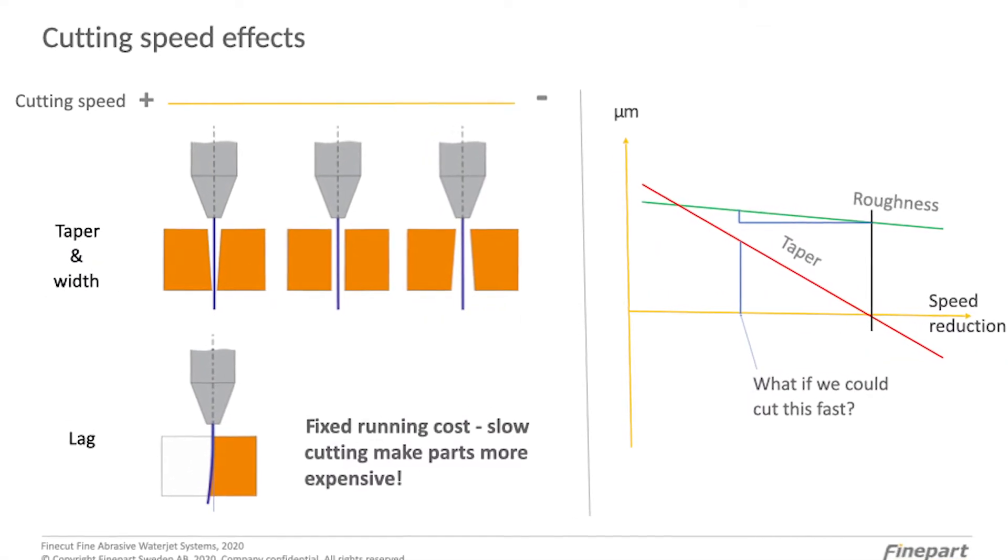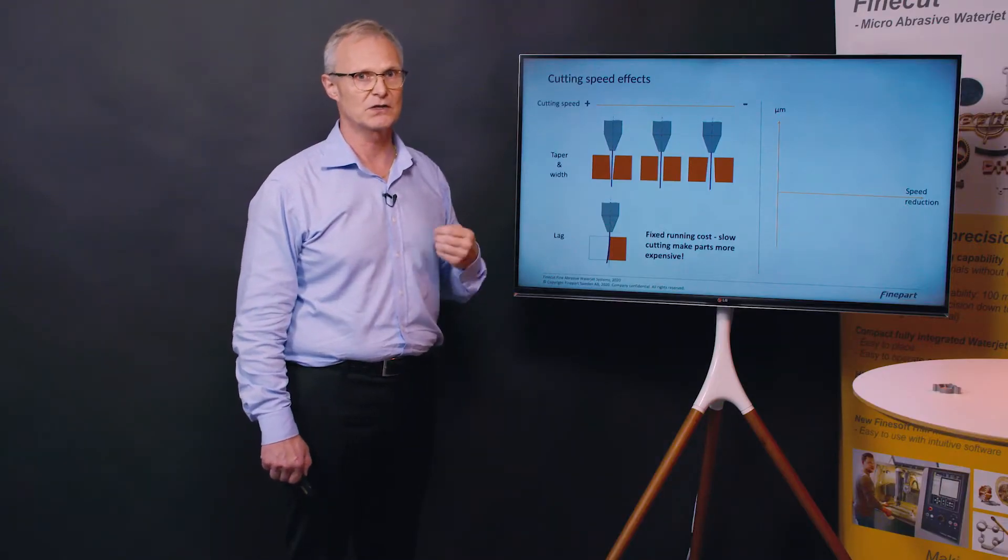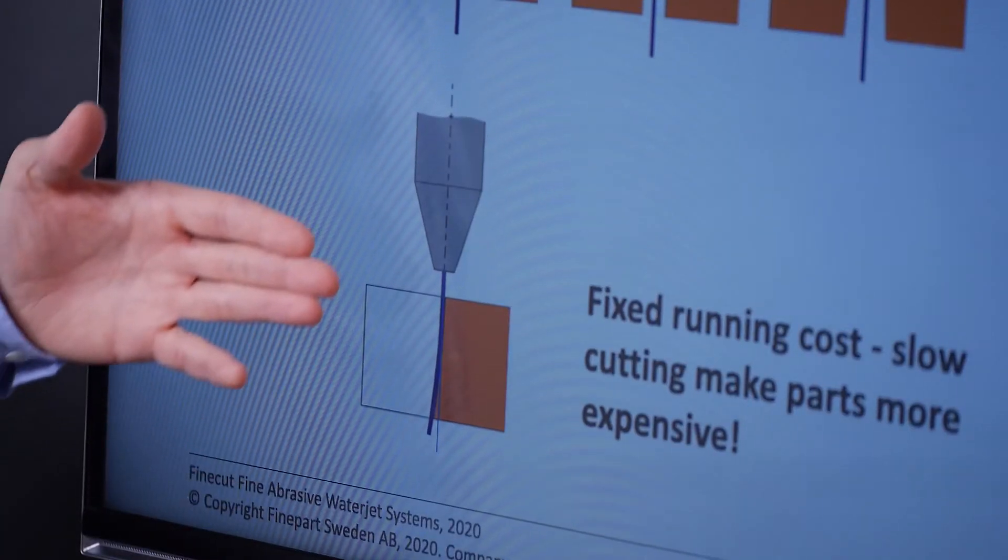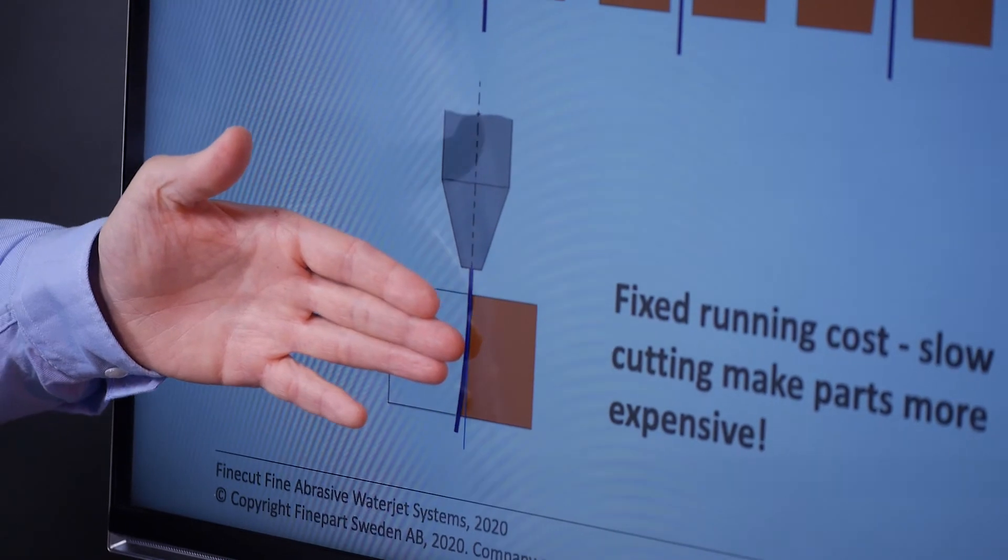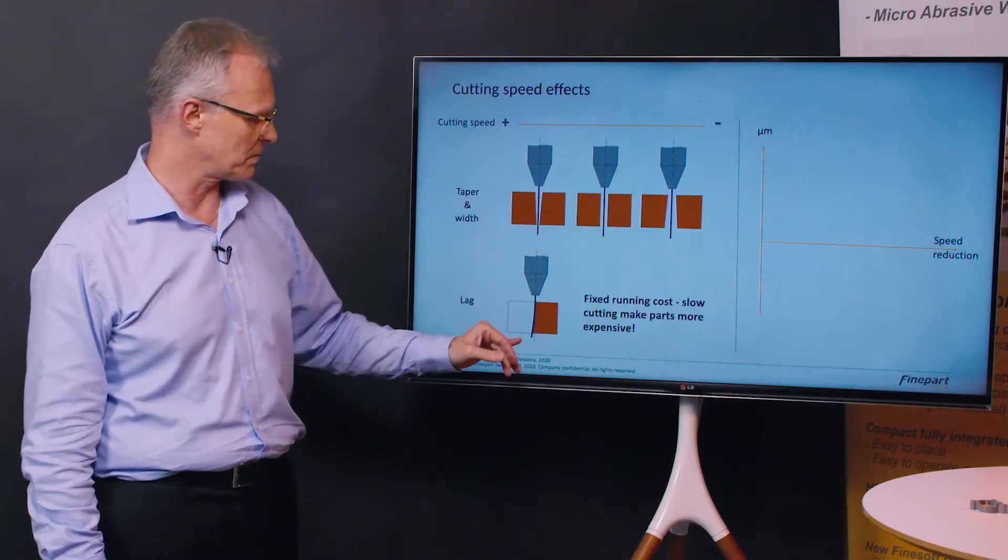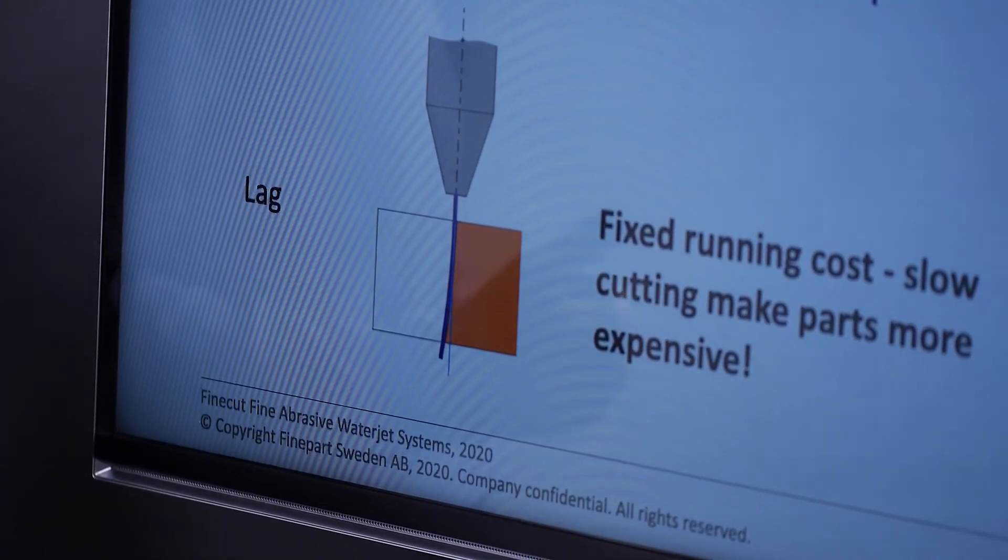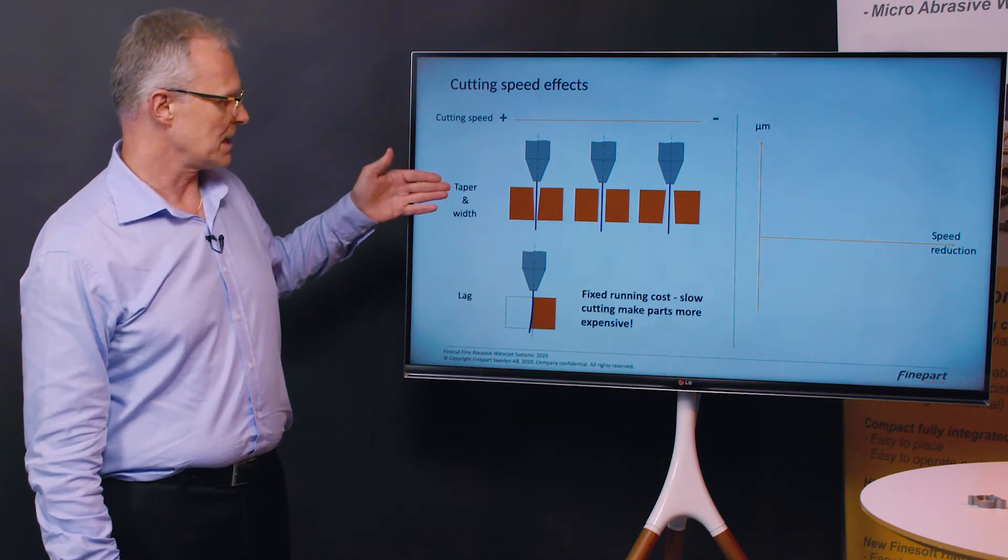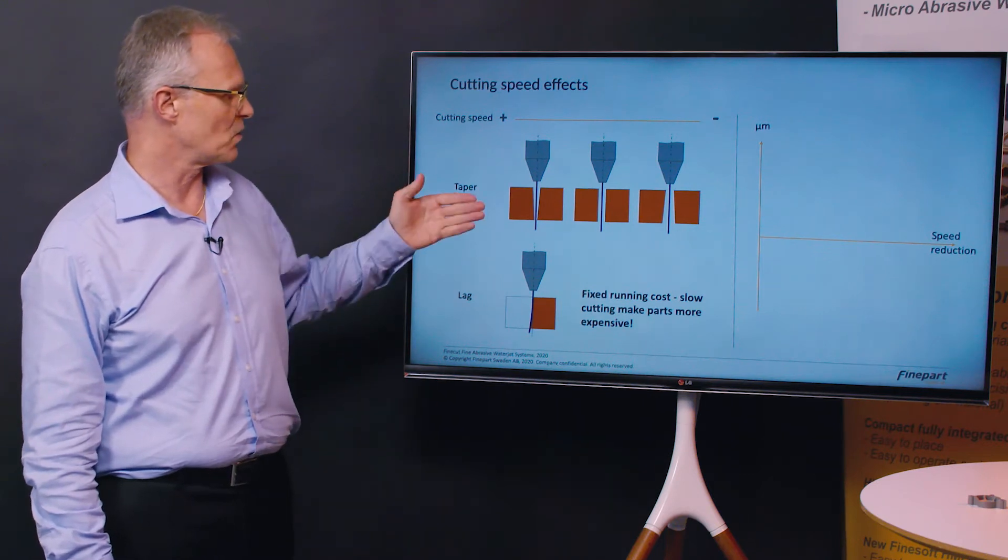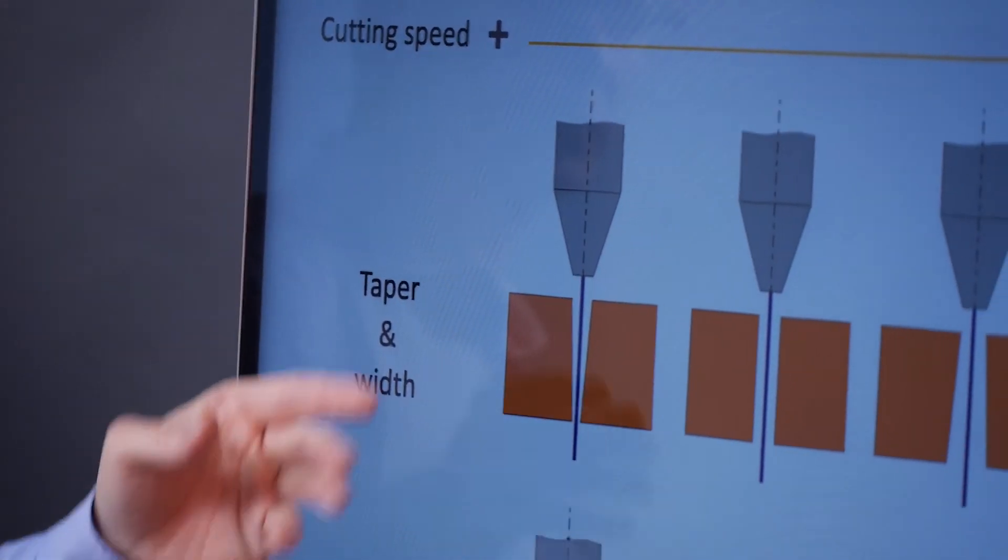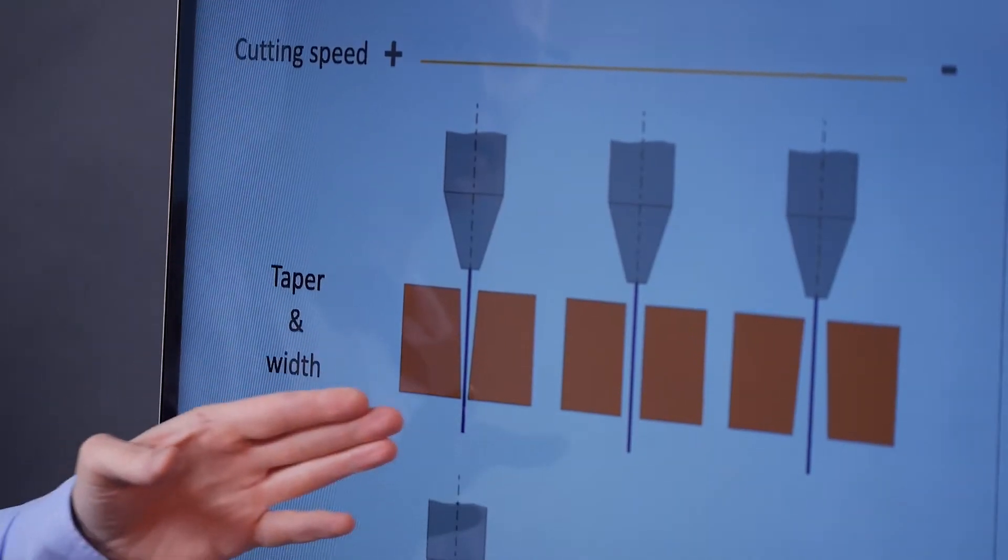So what is the challenge with abrasive waterjet technology? Well one challenge is that it's a dynamic tool. It's not a geometrically defined tool. Depending on the cutting speed we will have the jet being deflected slightly by the material. The faster we go we will have more jet lag with the bottom of the cut lagging behind the top of the cut. Also the taper and the width of the cut depends on the cutting speed. So if we go fast we will have a taper where the width of the cut at the top is wider than the cut at the bottom.